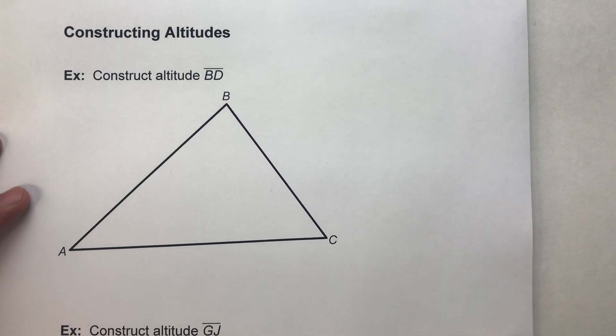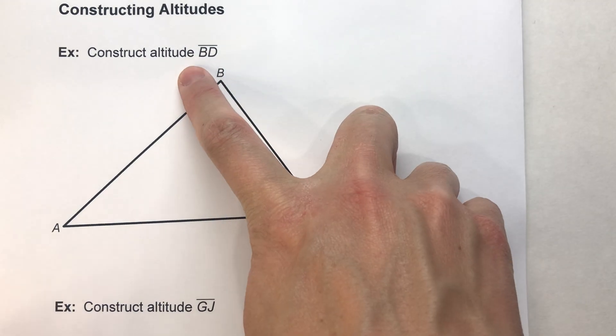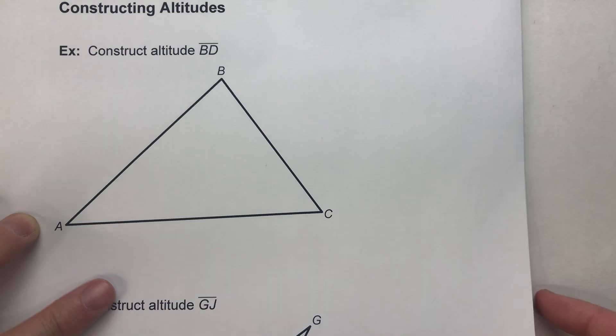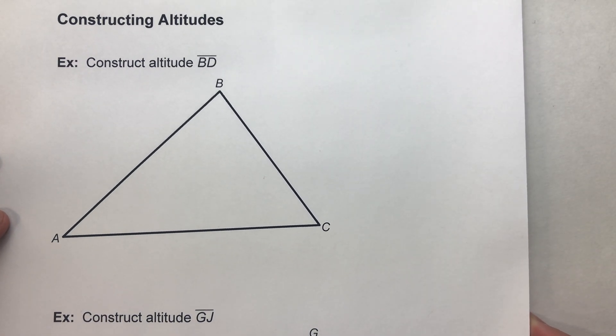Now I've got two different examples to do because sometimes altitudes are inside of the triangle and sometimes they're outside of a triangle. So it's helpful to see both kinds of examples.